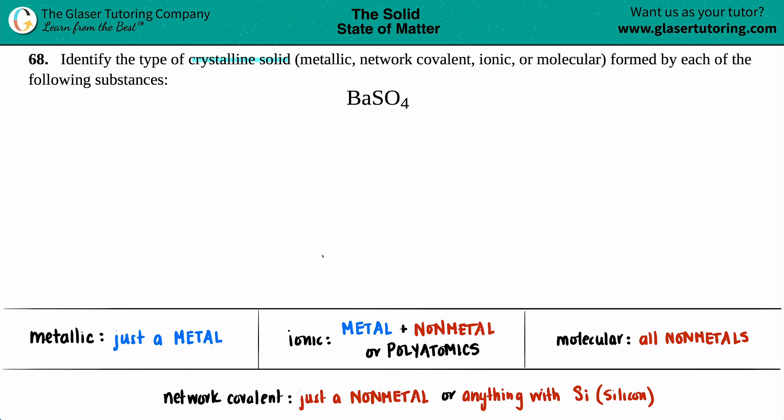On your test or quiz coming up, if this is on that test or quiz. So we'll just start from left to right. Metallic crystalline solids—the word metal is in the word metallic, so in order to have a metallic crystalline solid, you're just going to be consisting of a single metal, no non-metals.